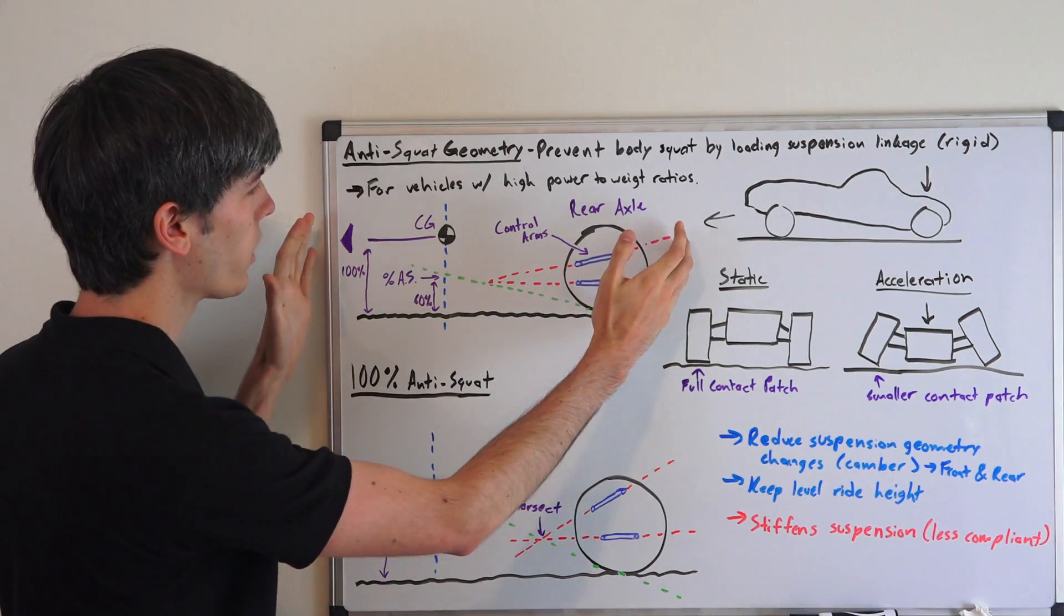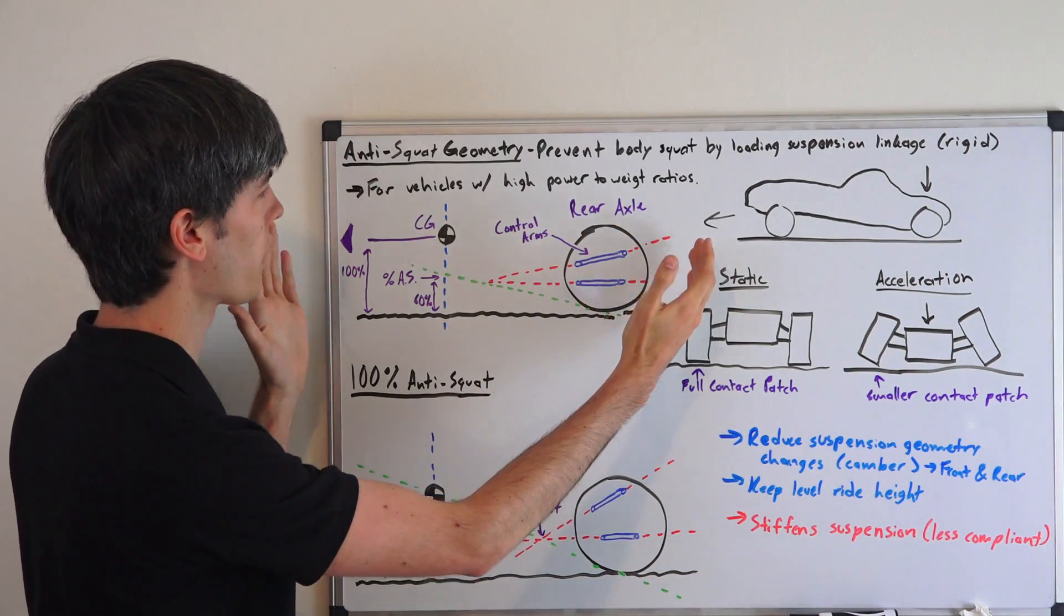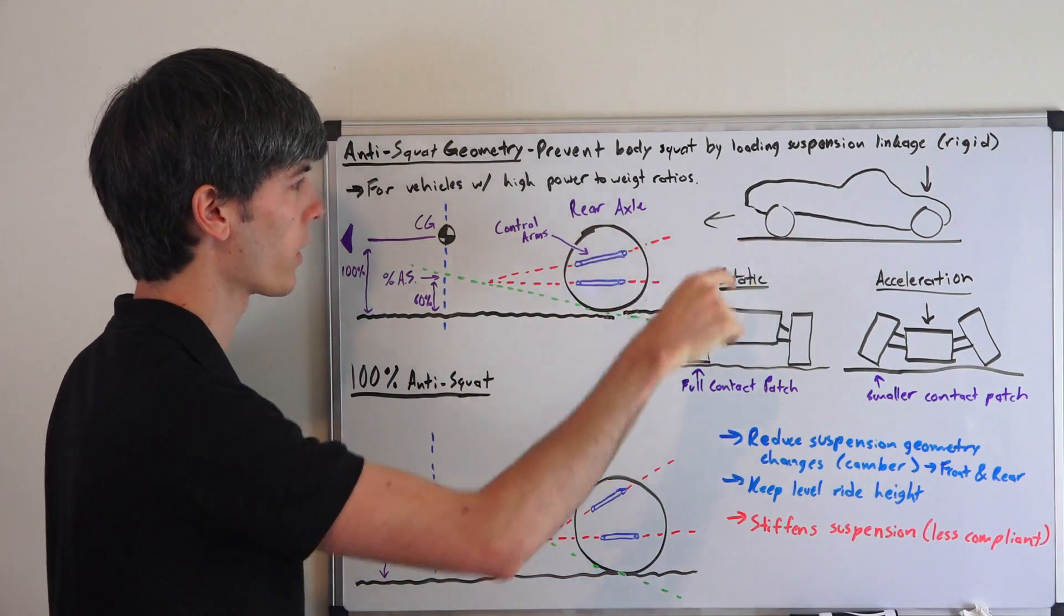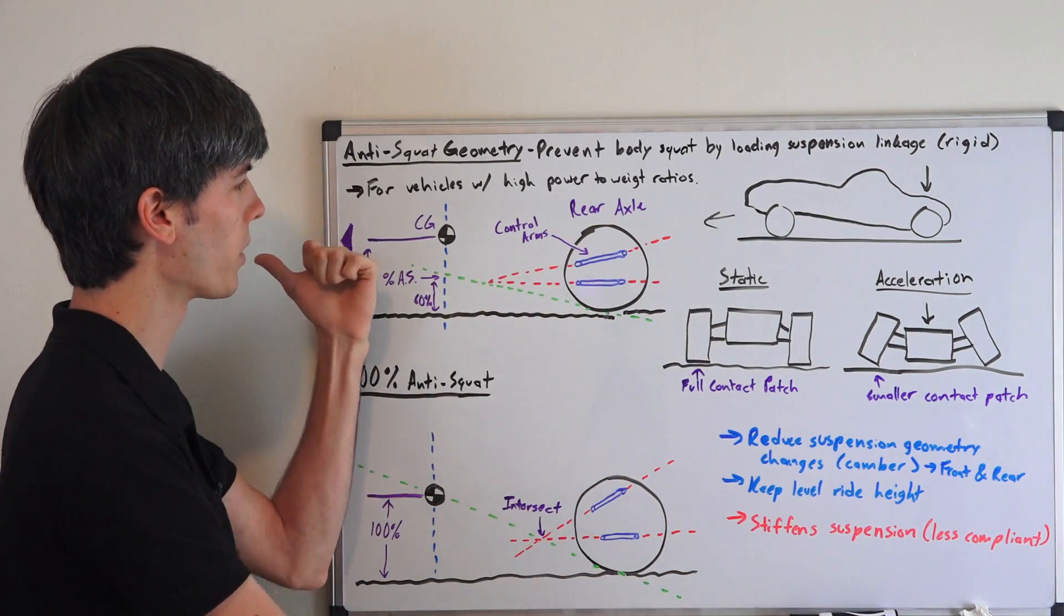Essentially what we're looking at here is the exact same thing as with anti-dive geometry except instead of this being the front axle and the car going this direction, this is the rear axle and the car is going to be going this direction.